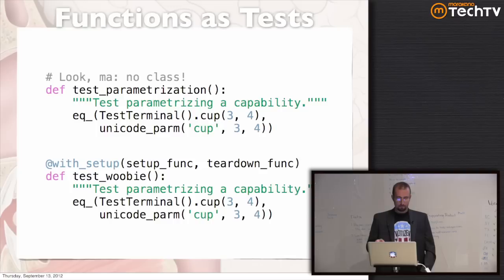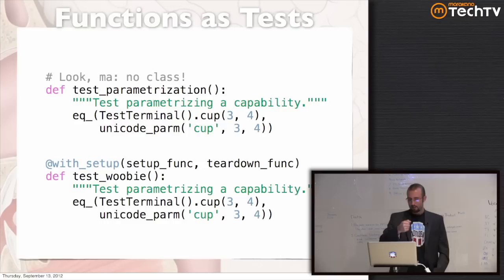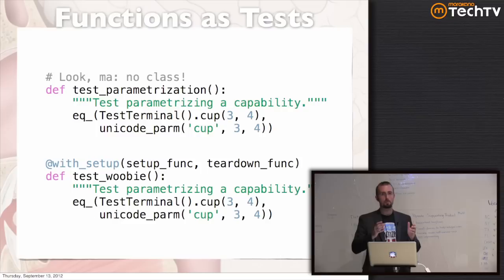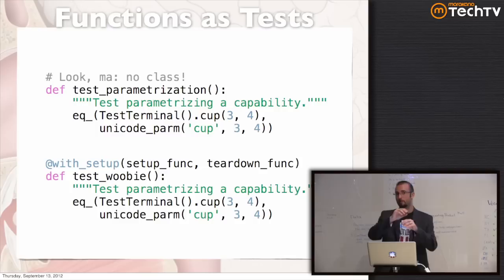There are also allowances for setup and teardown on function-based tests — a decorator that takes a setup function and a teardown function. You can put those at the root level or in a library and mix and match. Nose also supports package, module, class, and test-level setup and teardown. If you put a setup procedure at the top of your __init__ in a package, that'll happen before any test in the package runs.